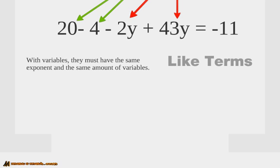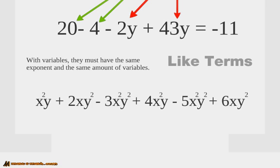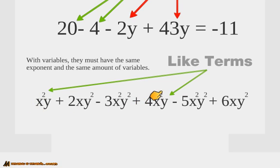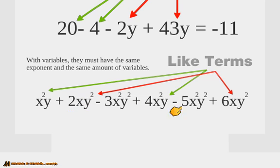It gets even crazier when you have exponents and a whole bunch of variables in the same term. With variables, they must have the same exponent and the same amount of variables. For example, x squared y and 4x squared y are like terms. You can't combine x squared y and x y squared — the variables are the same but the exponents are different. The two you can combine are 2xy squared and 6xy squared. And the negative 3x squared y squared and the negative 5x squared y squared are like terms. You can only combine ones that have the same variables, the same amount of variables, and the same exponents on each variable.